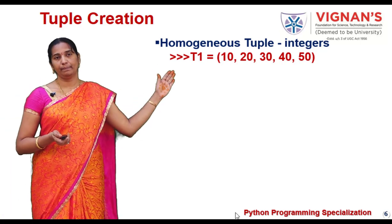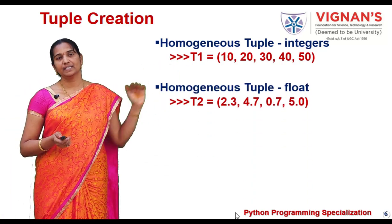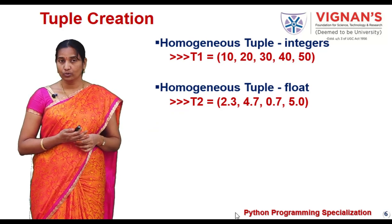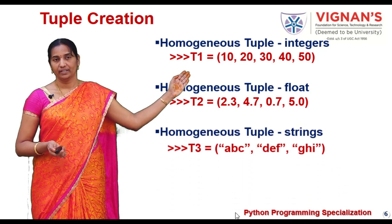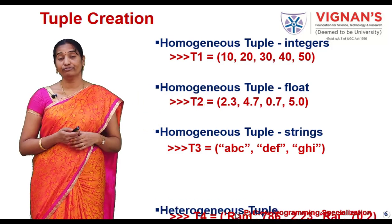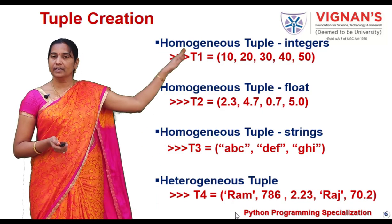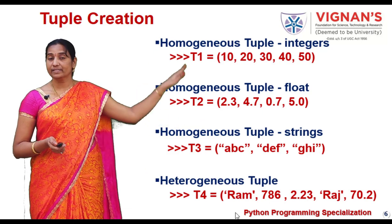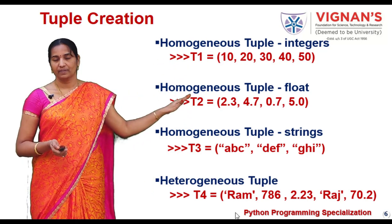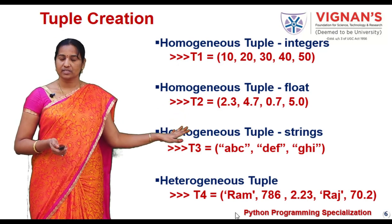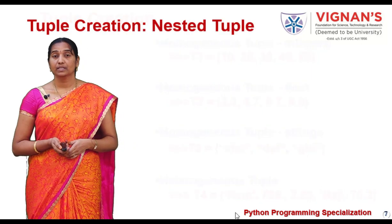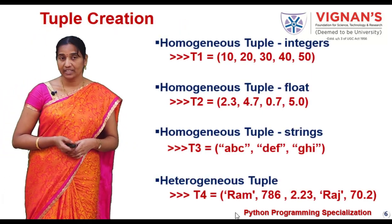Here you can observe a homogeneous tuple where all the elements in tuple t1 are of integer type. You can also have a homogeneous tuple where all elements are of type float. Here is an example of a tuple with all elements as strings — t3 is the tuple where all elements are of type string. Now you can see a heterogeneous tuple t4, which includes some strings, some integers, and even floating point numbers as elements. That is how we can create tuples of homogeneous and heterogeneous type.